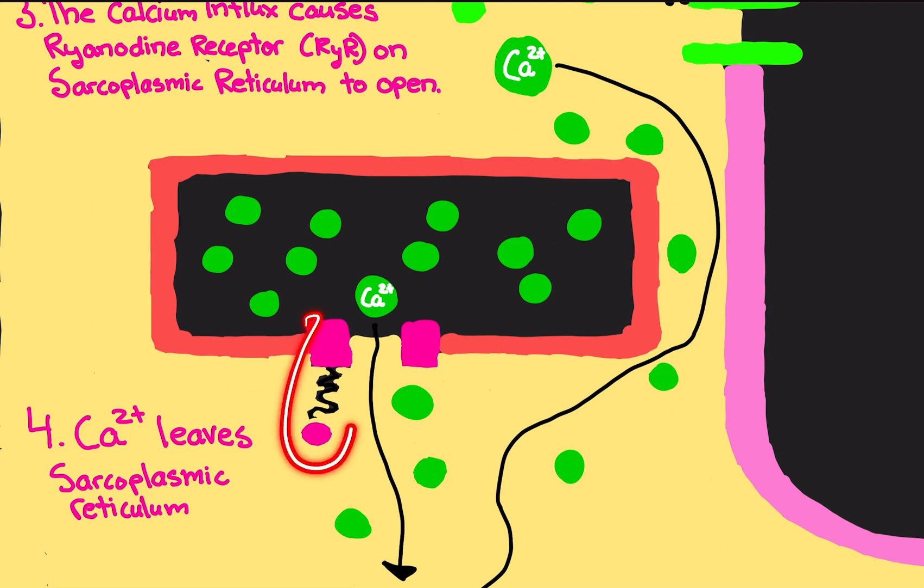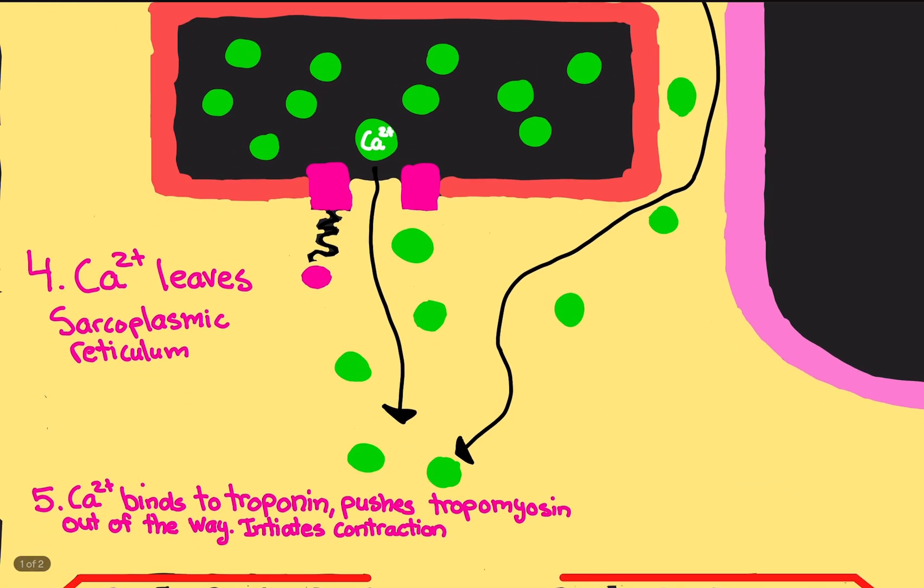Ryanodine receptors is this pink thing. It also has that ball and chain kind of deal. Now the ryanodine receptors are open, so now calcium can leave the sarcoplasmic reticulum and join the sarcoplasm, or basically the cytoplasm of the muscle cell. It's free.